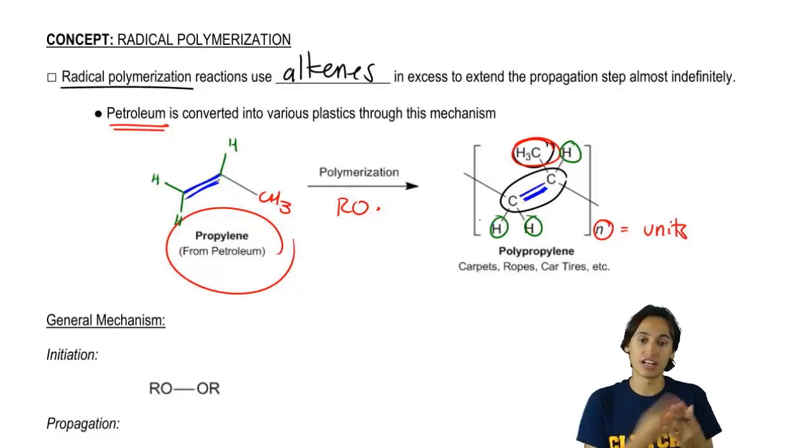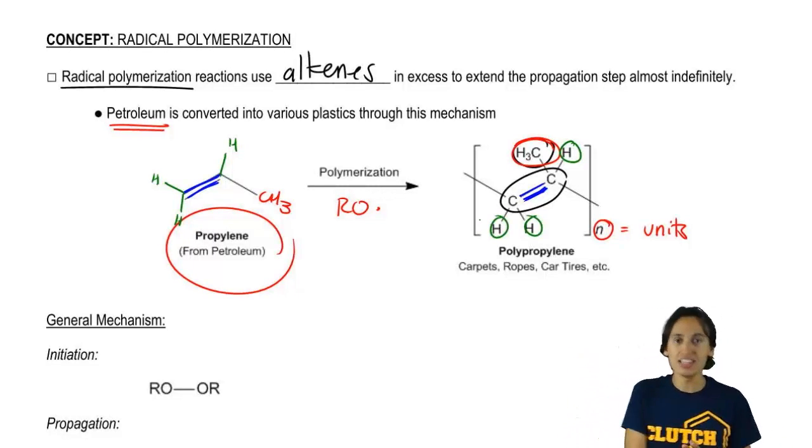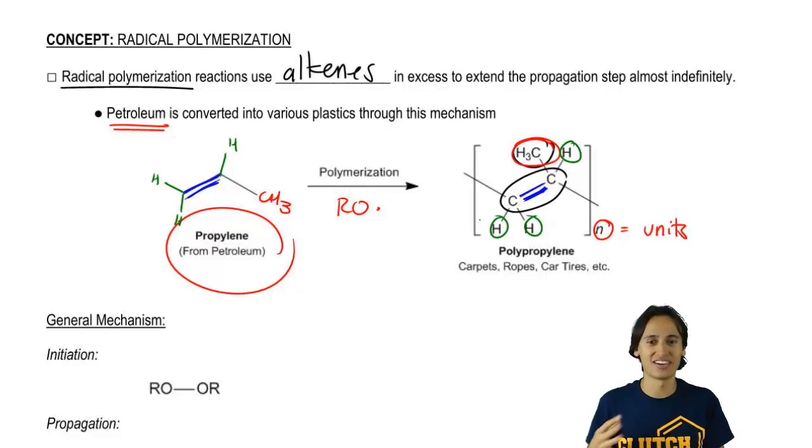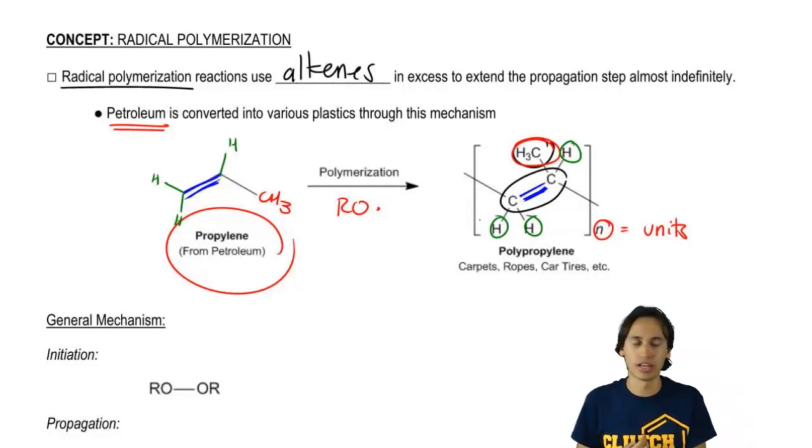And this just keeps extending and extending. And actually, polypropylene is used to make like AstroTurf and car tires and ropes and stuff. So it's kind of cool how it actually has a real life application.